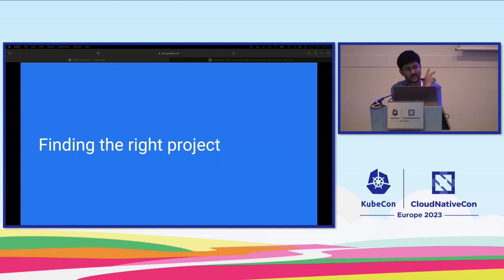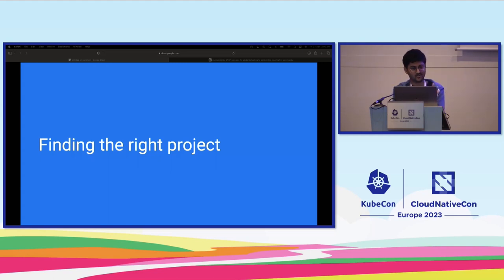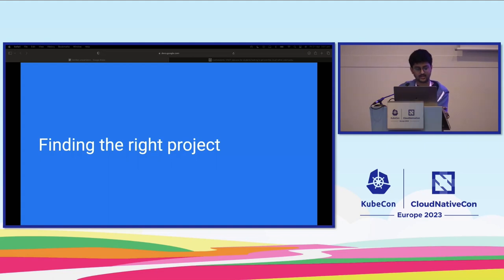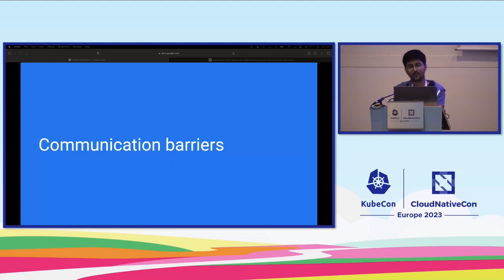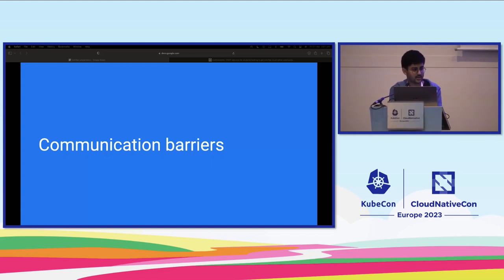Finding the right project - forget about the right project, finding the right domain in tech. Do I get into web dev? Do I get into machine learning? Do I get into blockchain or DevOps? There are many projects out there, and students face this issue: they want to find projects that align with their skills and interests. The biggest one, I think, is communication barriers. Open source projects require a lot of collaboration across different parts of the world, and some people may struggle with cultural differences, language barriers, or sometimes just not knowing how to ask the right question.